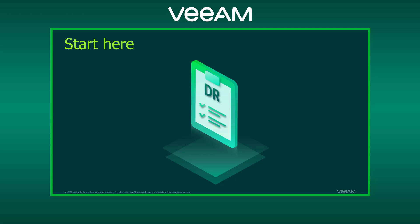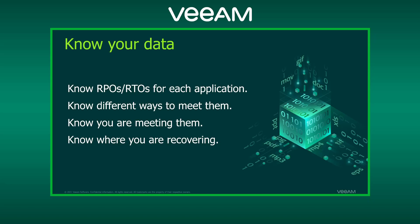Let's go over some practical tips for either updating your disaster recovery plan or creating a new one — wherever you are in your DR journey, these tips will really help. First things first: know your data. You need to know your RPOs and RTOs for each application. RPO is your recovery point objective, or the point in time you're going to recover to. RTO is your recovery time objective, or how long it's going to take you to recover. Each application will have different RPOs and RTOs based on business requirements and dollar amount, because downtime costs money.